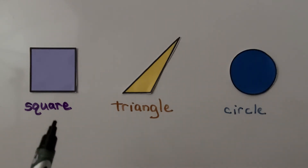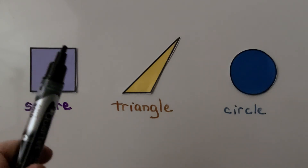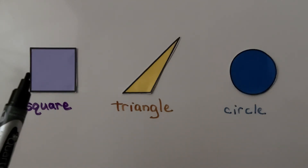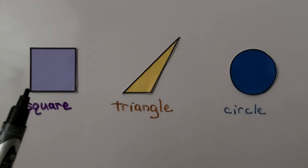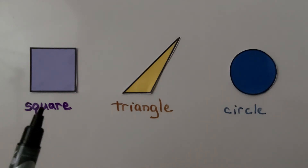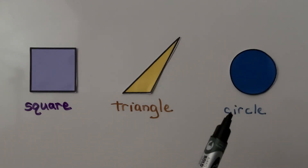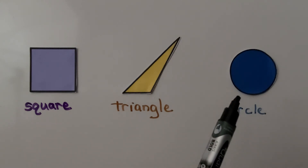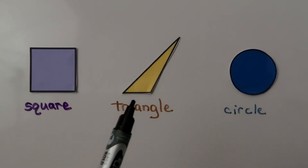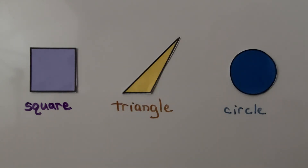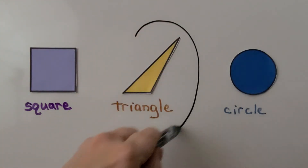Well, it can't be this one because it has one, two, three, four sides and one, two, three, four vertices. So it's not the square. And a circle doesn't have any vertices — it doesn't have any corners. A triangle has three sides and three vertices. It must be the triangle.